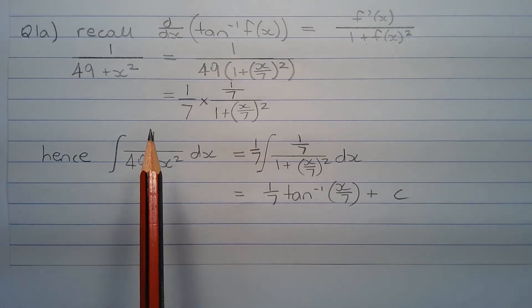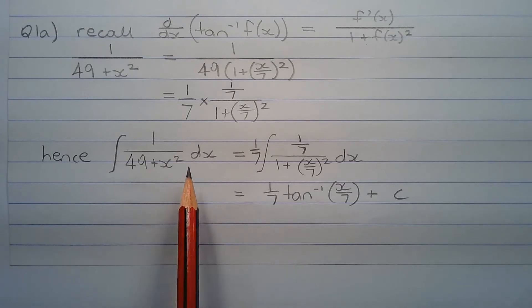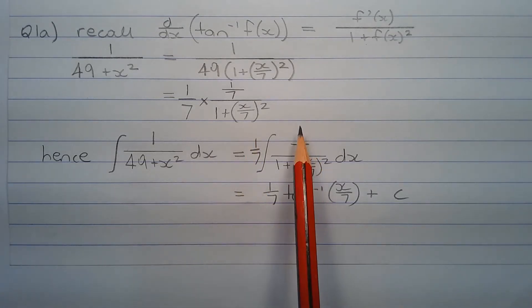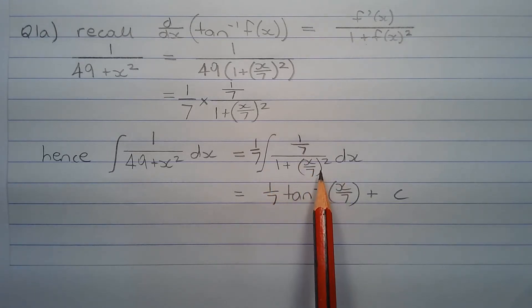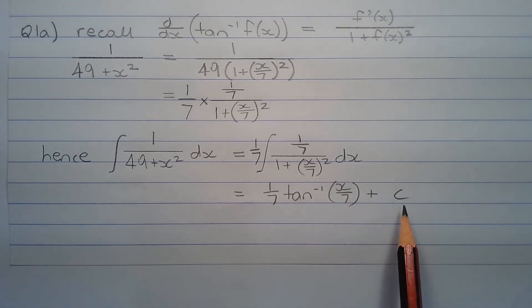Hence, the integral of 1 over 49 plus x squared dx equals 1 over 7 times the integral of 1 over 7 over 1 plus x over 7 squared dx, which equals 1 over 7 times inverse tan of x over 7 plus the constant of integration c.